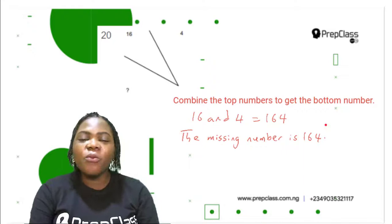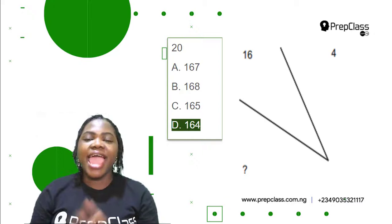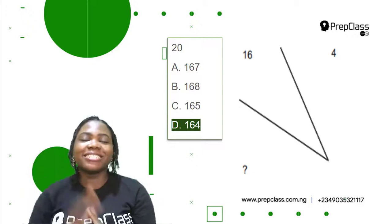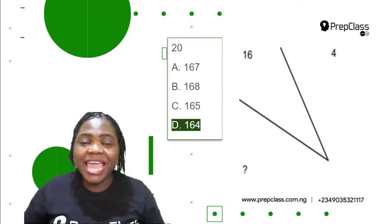The missing number is 164. I hope you also got the same answer because this is very simple. Which of the options is correct? A is 167, wrong. B is 168, wrong. C is 165, wrong. D is 167, correct. So D is the correct option: 164. To get the bottom number, simply combine the top numbers — as simple as A, B, C.